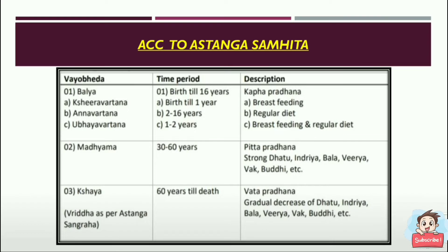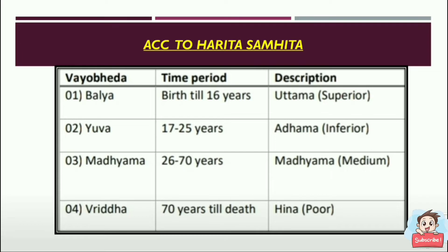According to Harita Samhita, he gave a brief elaboration in four parts. Birth till 16 years is called Balya Vaya Bheda and is Uttama (superior). From 17 to 25 years it is called Yuva and is Adhamah (inferior). From 26 to 70 years it is called Madhyama Vaya Bheda and is Madhyama (medium). From 70 years till death it is called Vidya Vaya Bheda and is Hina (poor).